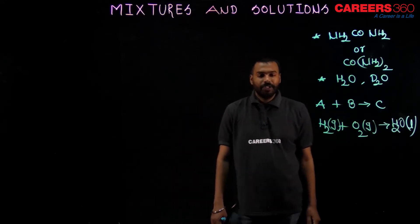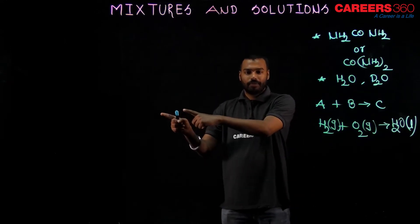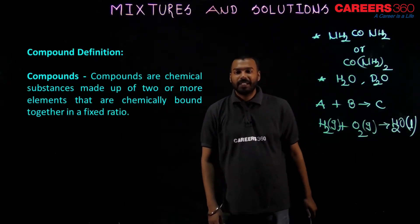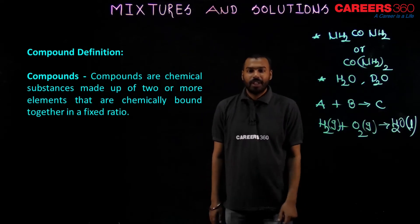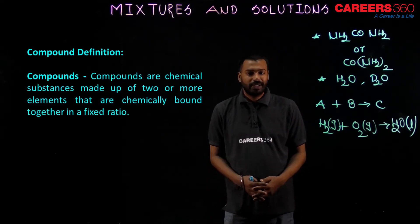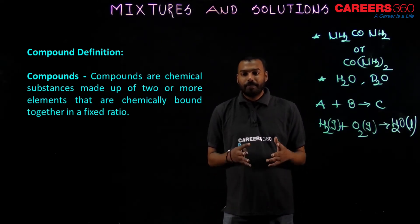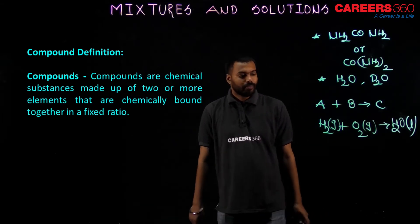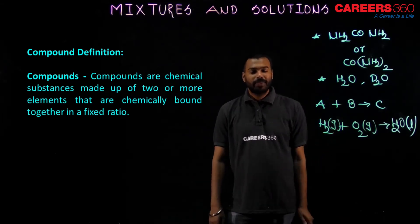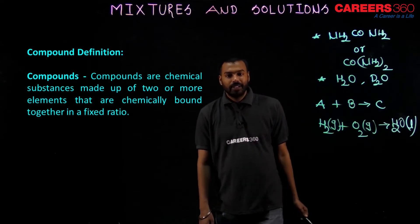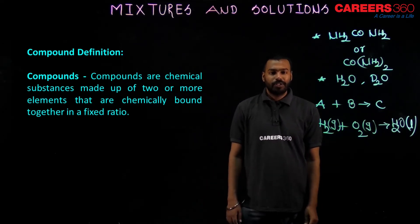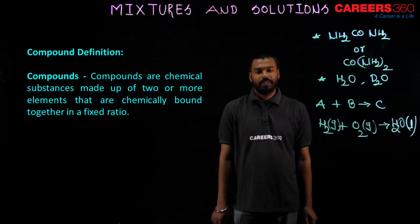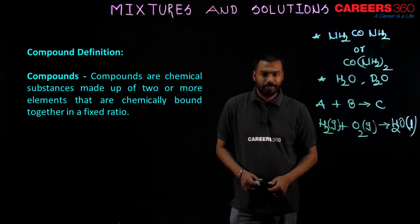Let us see the formal definition of compound. Compounds are chemical substances made up of two or more elements that are chemically bonded together in a fixed ratio. When two or more elements combine together in a fixed ratio, the formed substance is known as a compound.